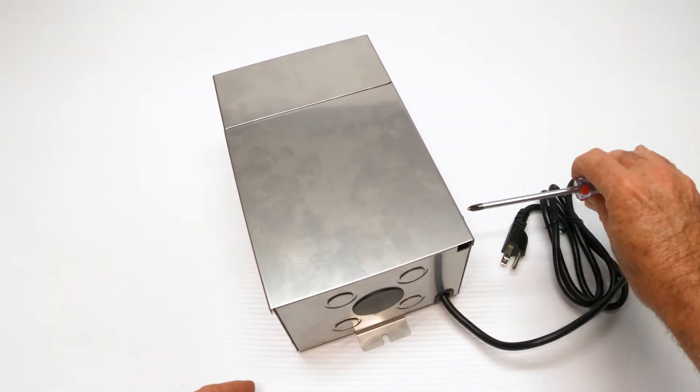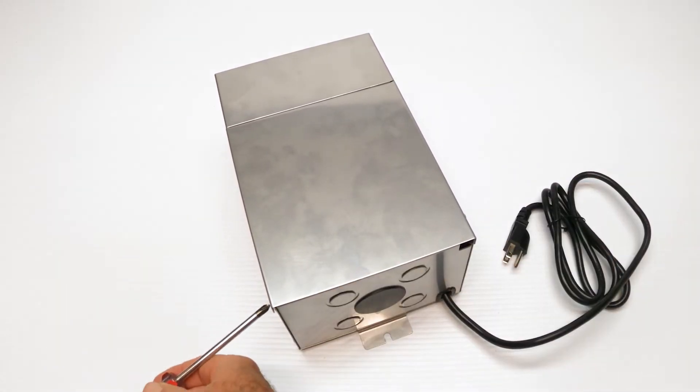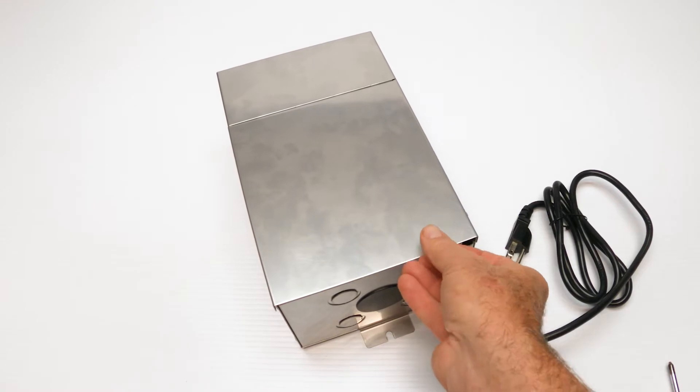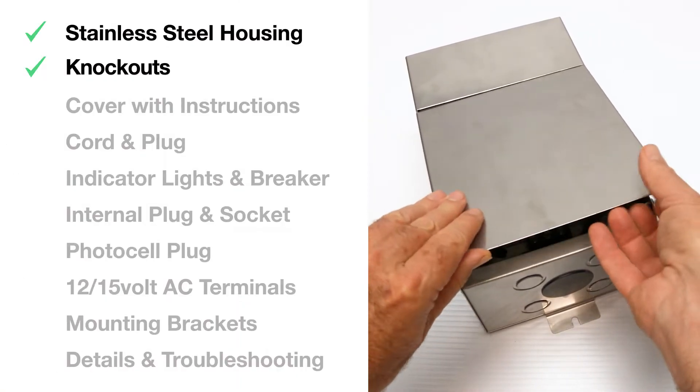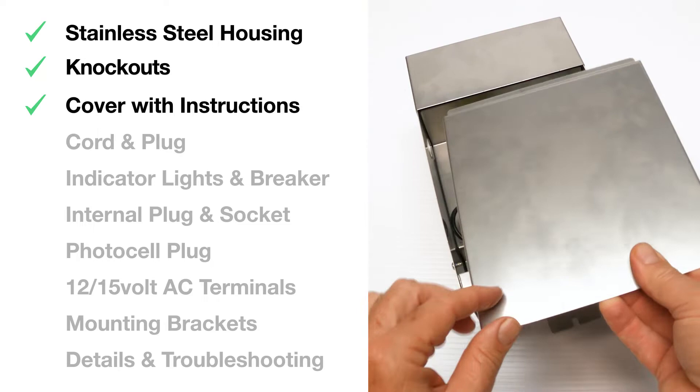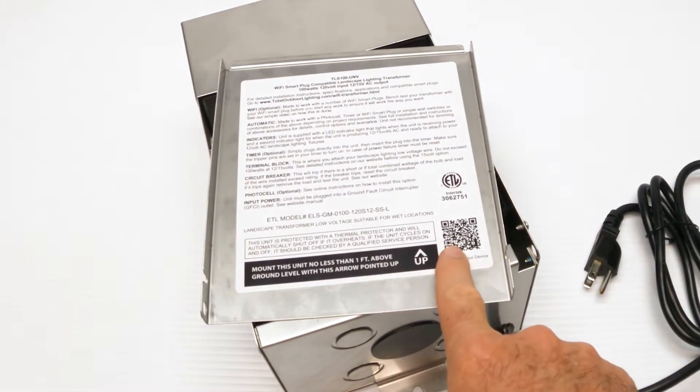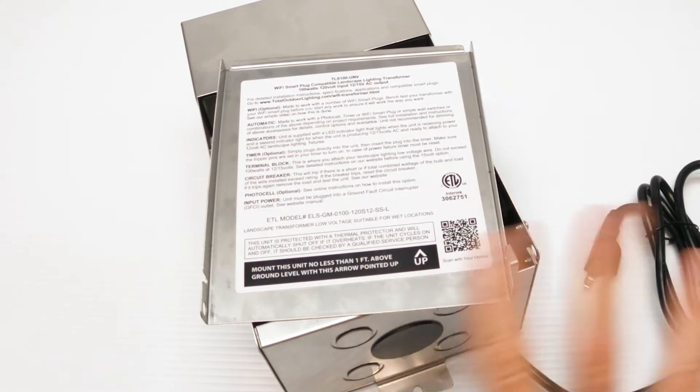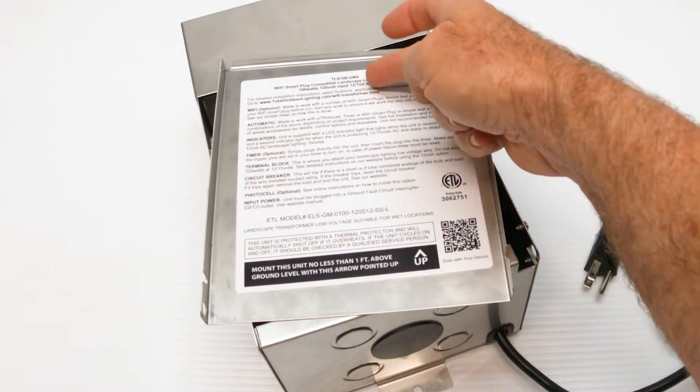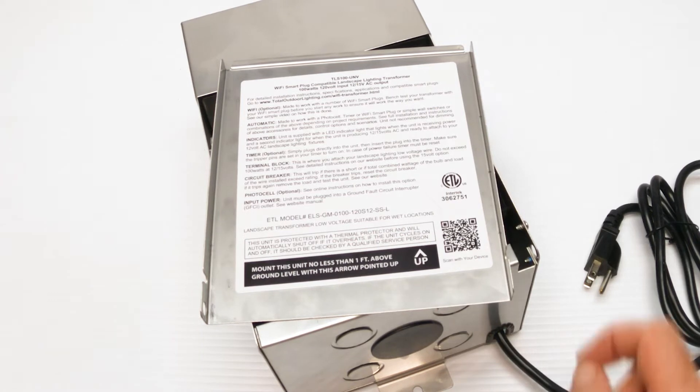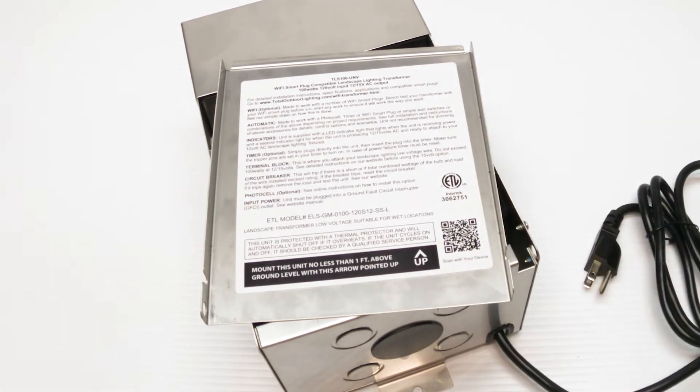Undo the screws on each side. There's one here and here. Just loosen them. Don't take them all the way out. And that will allow you to flip this cover up, slide it out of position and flip it over. On this side also, you'll find the QR code, which is right here. And that brings you to all kinds of information and general information is right here, as well as the ETL label, which is very important.